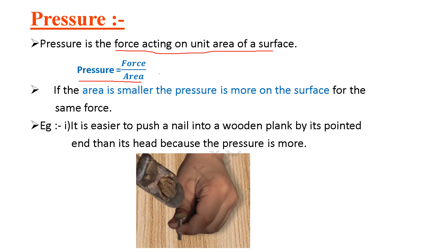From this equation we can say that if the area is less, the pressure would be more, and if the area increases, the pressure decreases. We will see a few examples which will help us to understand this concept. The first example is: we know that it is easier to push a nail into a wooden plank by its pointed end because the pressure is more in this case.